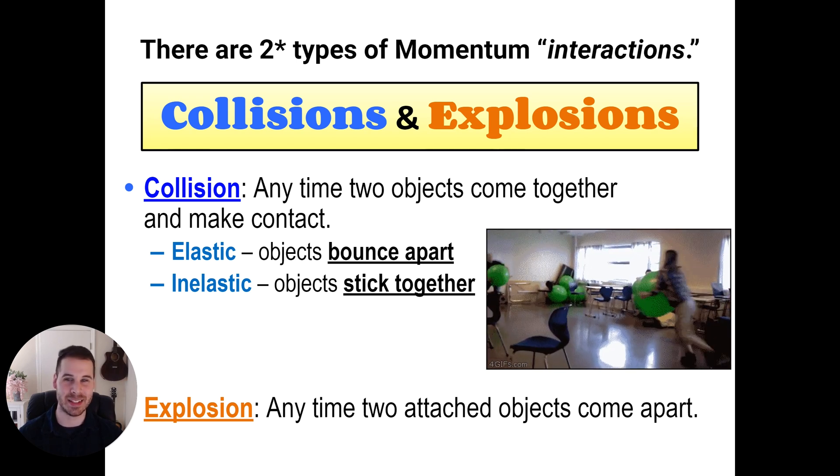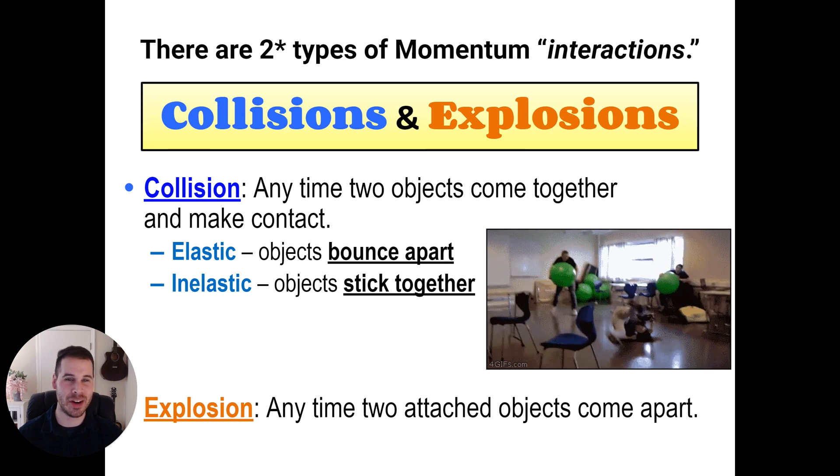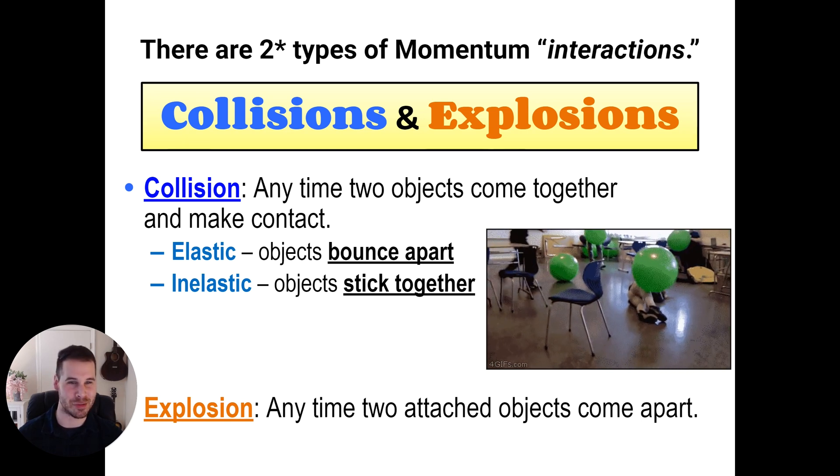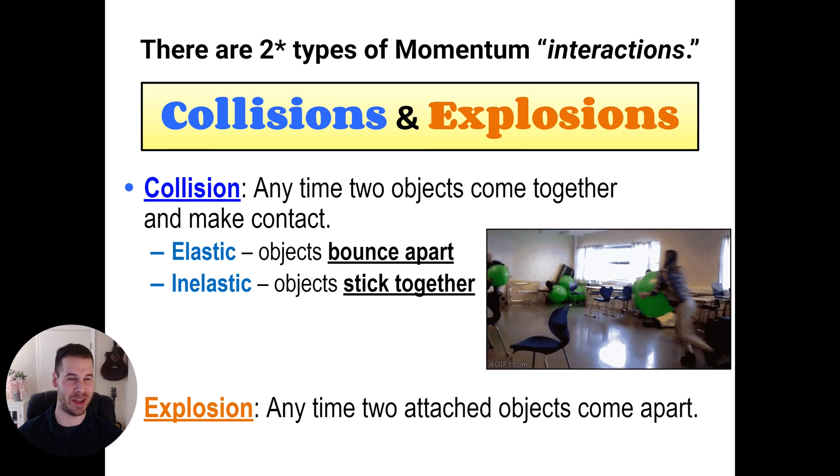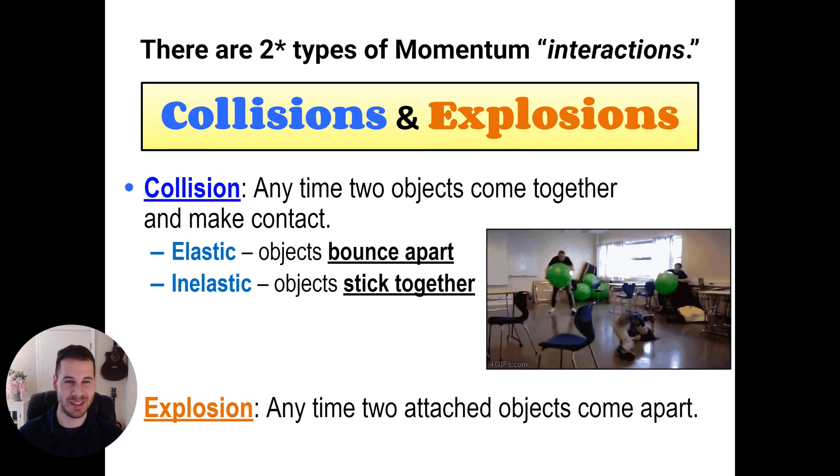Here's some animations to help you visualize these three types of interactions. First, an elastic collision. These two people run at each other, they bounce apart, and then one person just totally eats it as a result. This is brutal. It's like one of my favorite gifs though. Boom! There she blows.